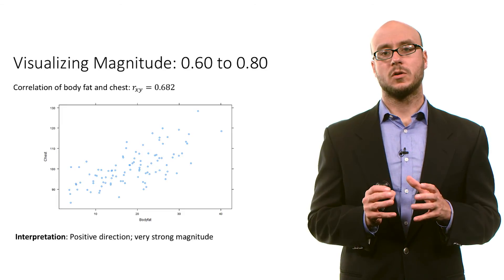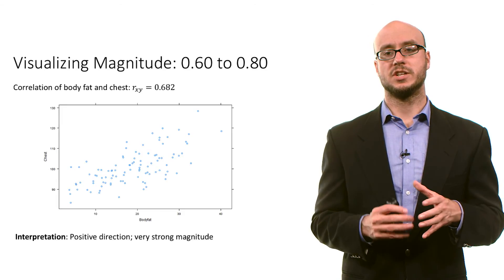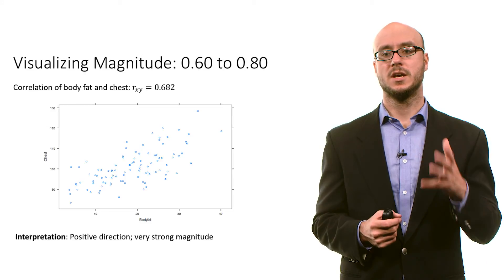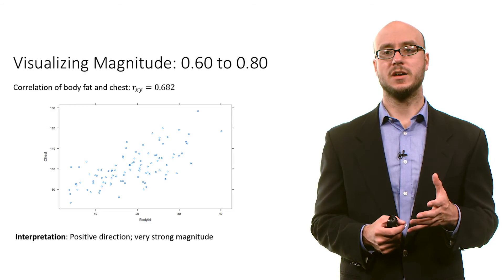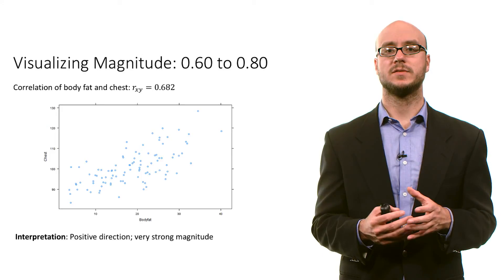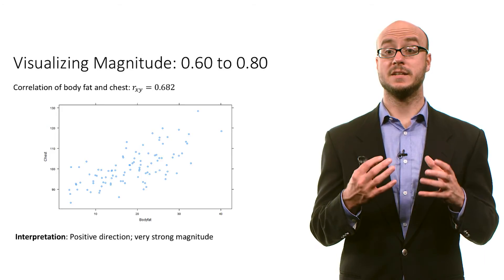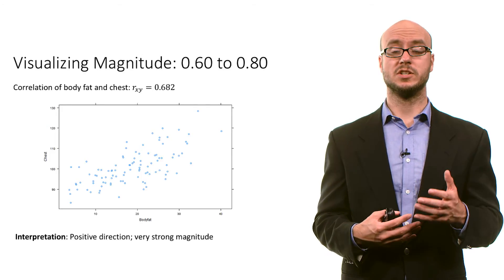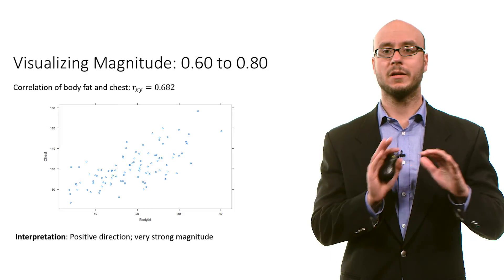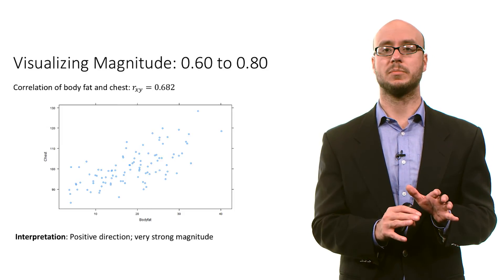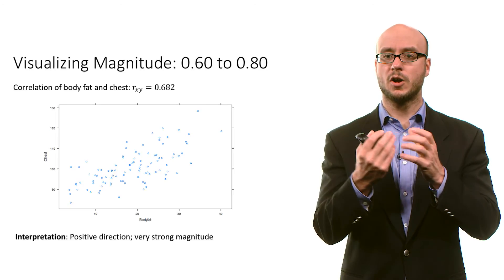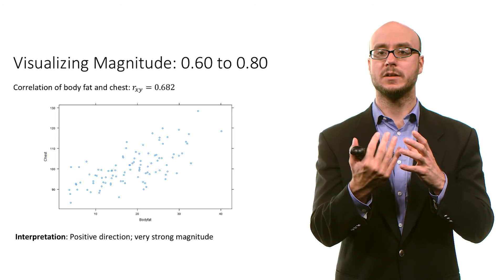If we calculate the correlation coefficient between body fat percentage and the circumference of one's chest, we get a value of 0.682. This is a positive direction, and using the guidelines we've discussed, it's a very strong magnitude. And you can see, compared to the previous scatter plot, there is a more obvious pattern in the data.